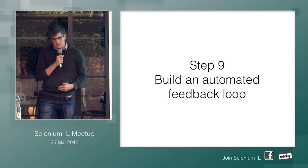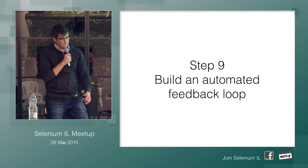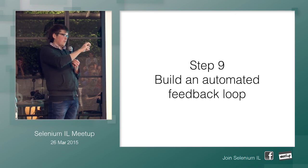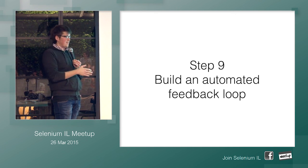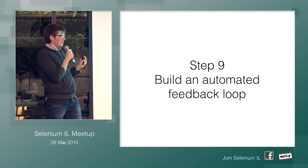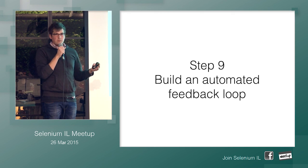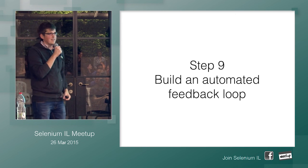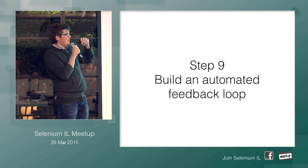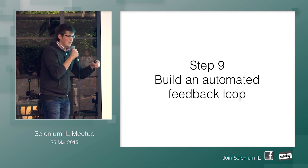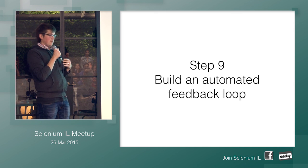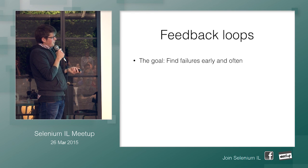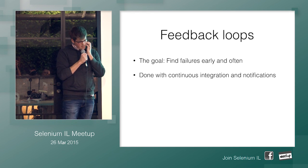The next step is to build an automated feedback loop — this is kind of the most important piece. After we've done all the other really important pieces that should not be neglected, we want to build an automated feedback loop. The reason we do all this is not so we can run the tests locally and find issues and then run over to the development team and say 'this is broken, fix it.' It's to build an automated feedback loop that tells the developer as early as possible in the cycle. The goal is to find failures early and often using continuous integration and notifications.